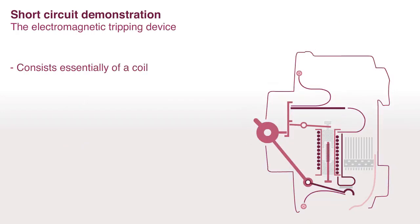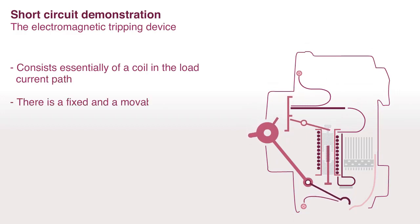Short circuit demonstration. The electromagnetic tripping device consists essentially of a coil in the load current path. There is a fixed and a moveable armature.